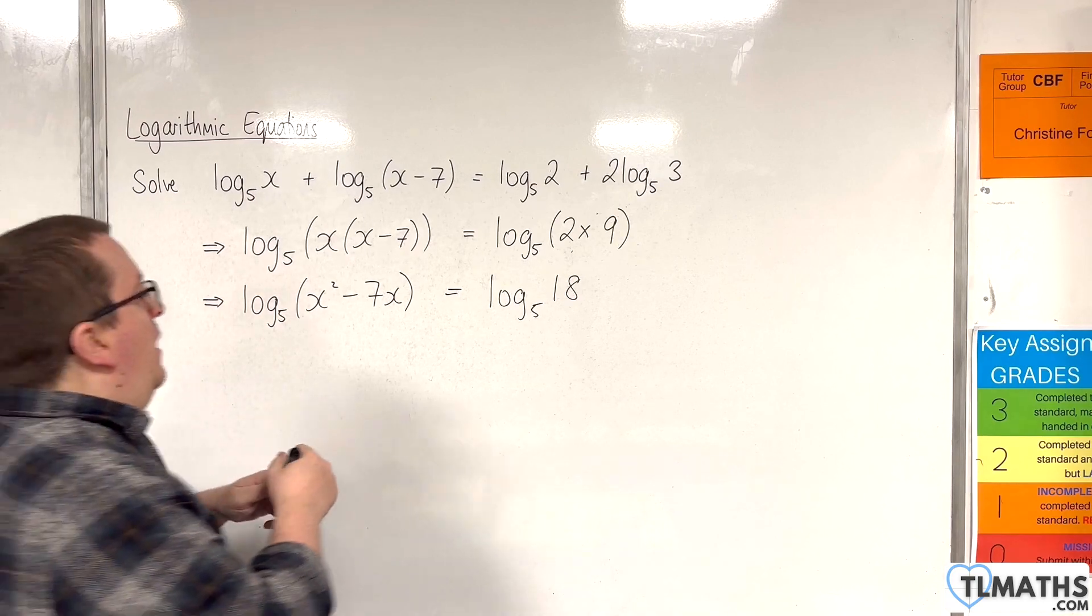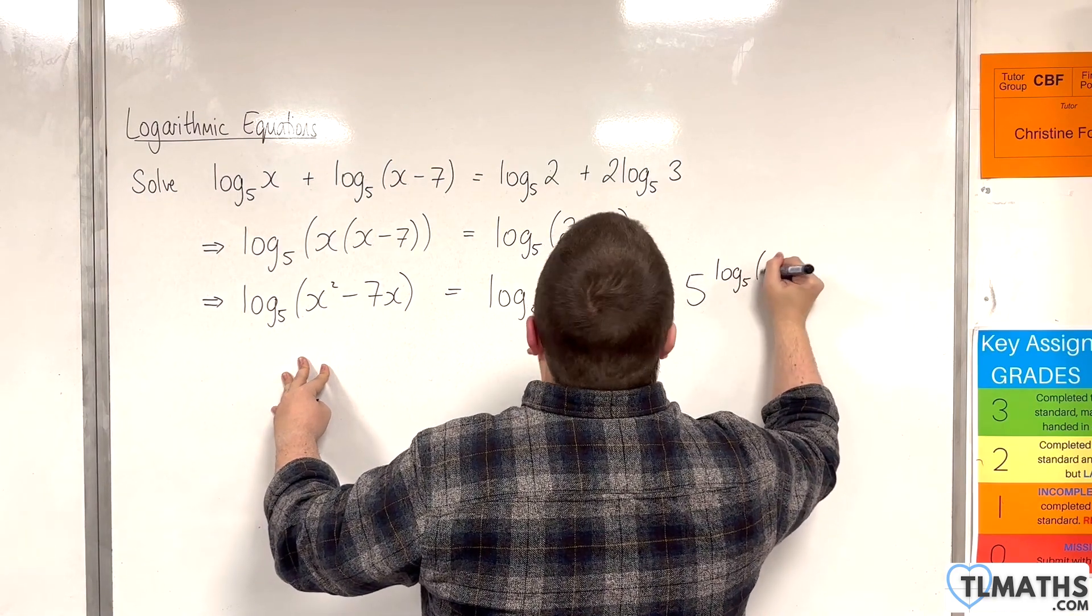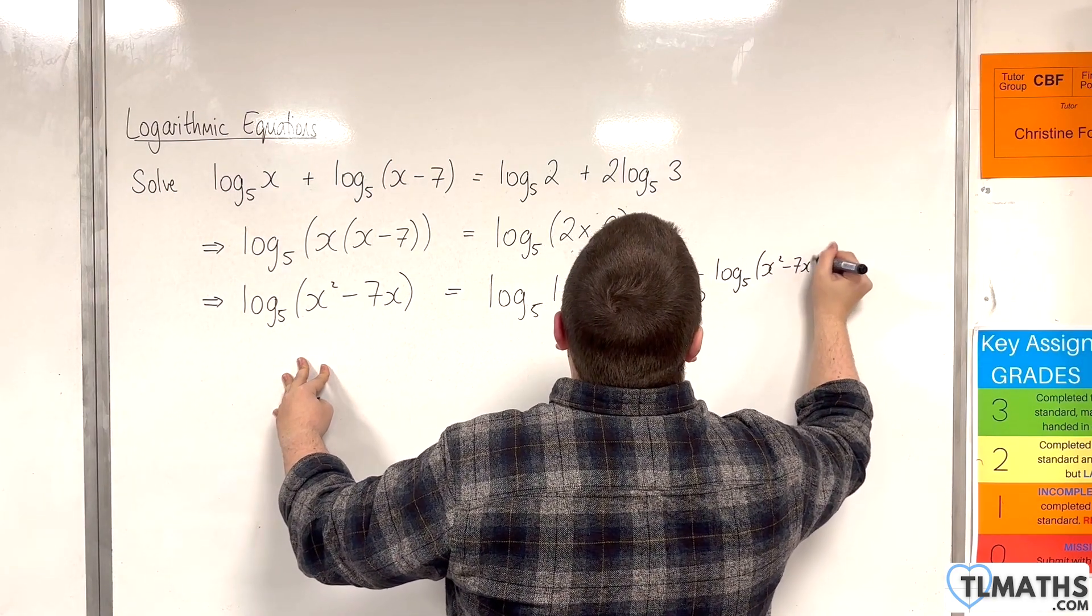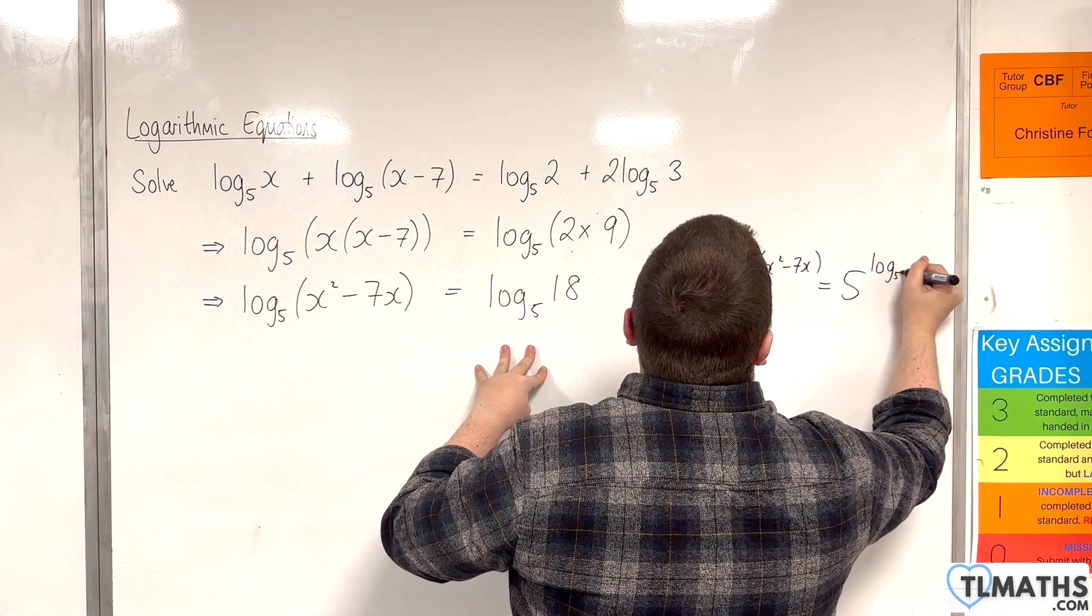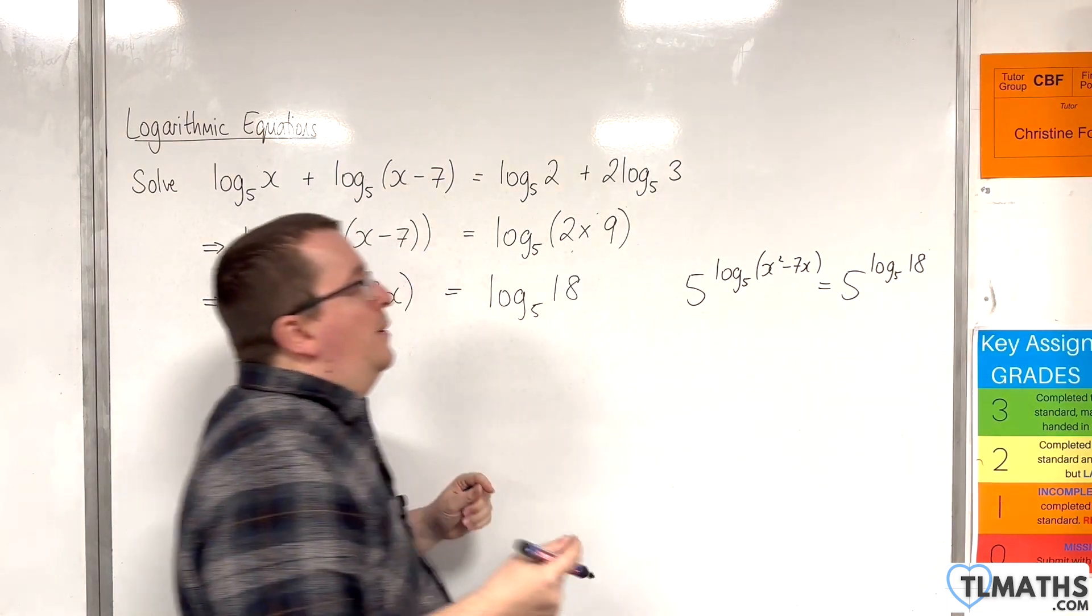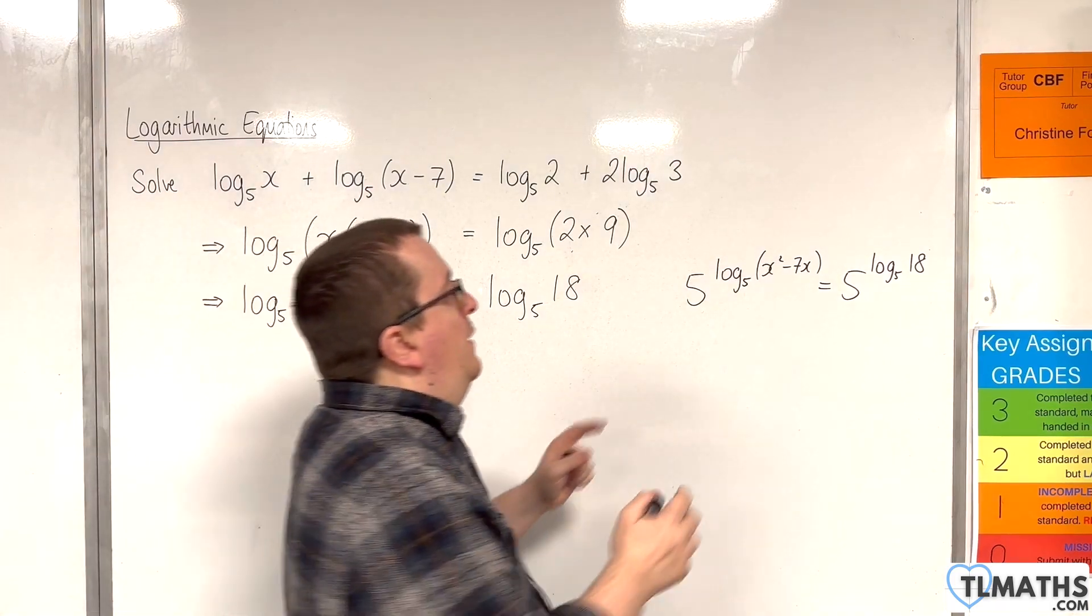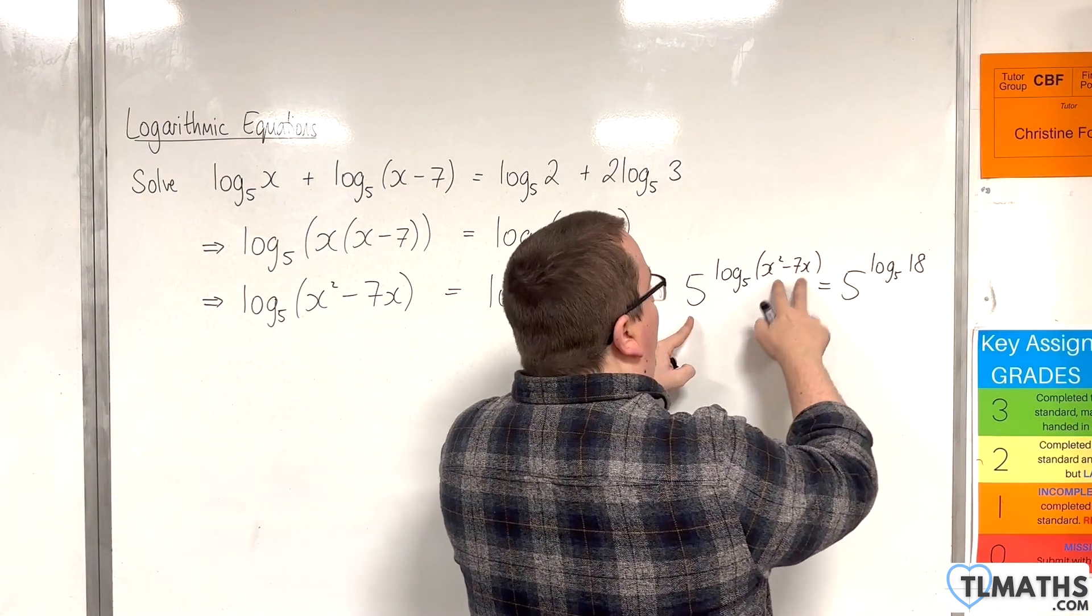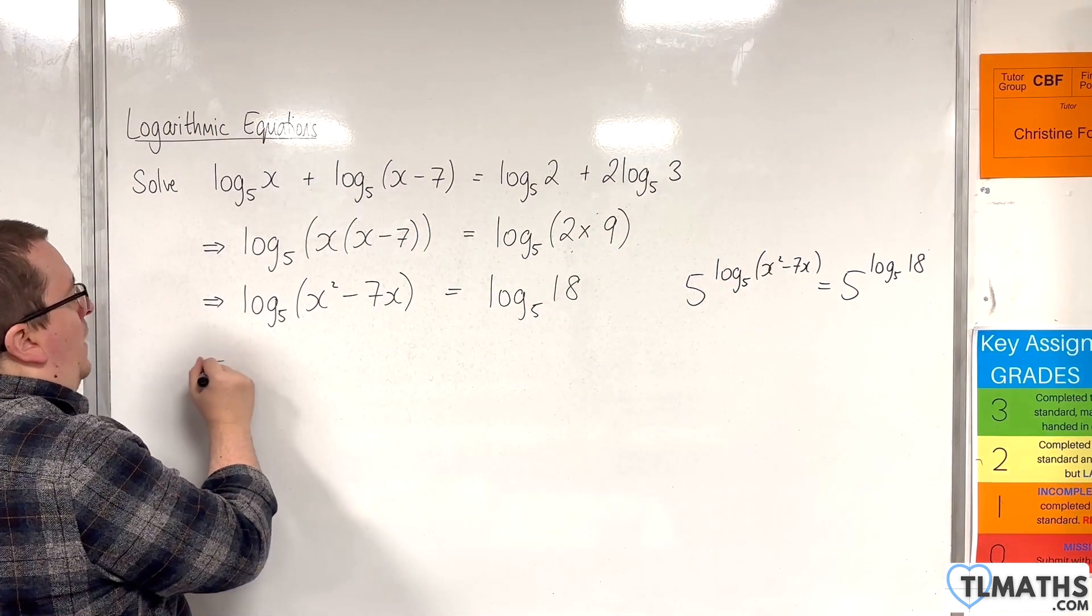Essentially I'm going to be doing 5 to the power of log base 5 of (x² - 7x) equals 5 to the power of log base 5 of 18. Because essentially I'm using an inverse function here and 5 to the power of log base 5 of (x² - 7x) is just (x² - 7x).